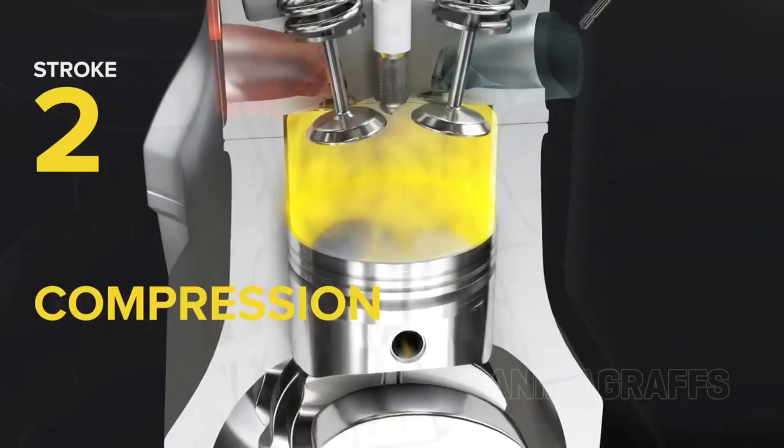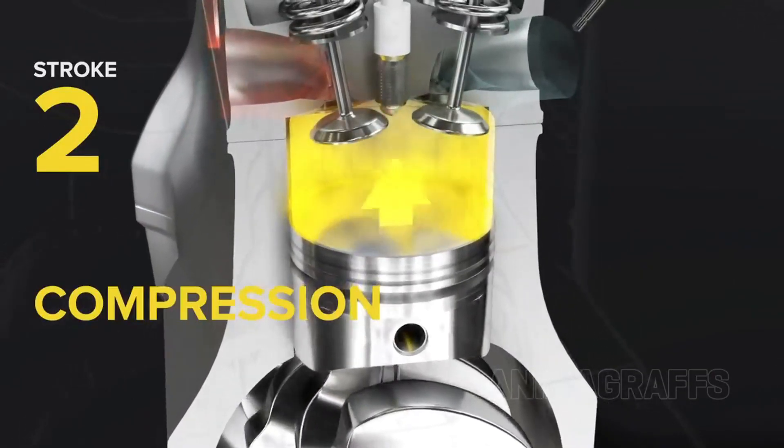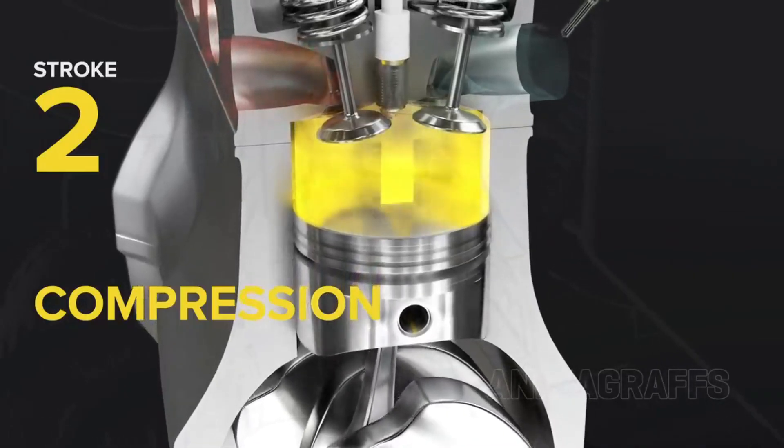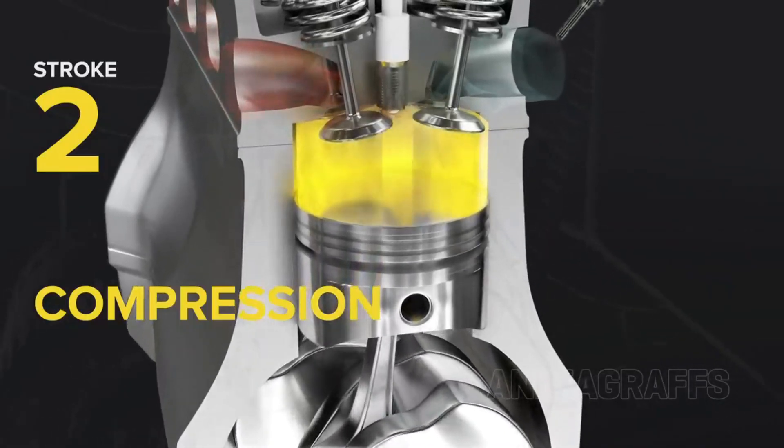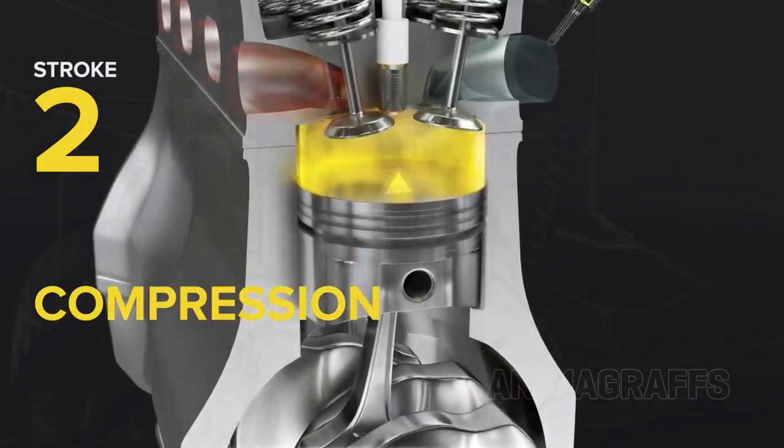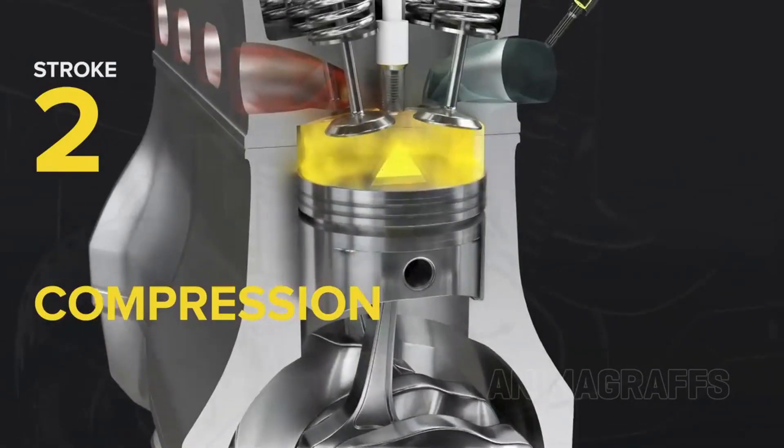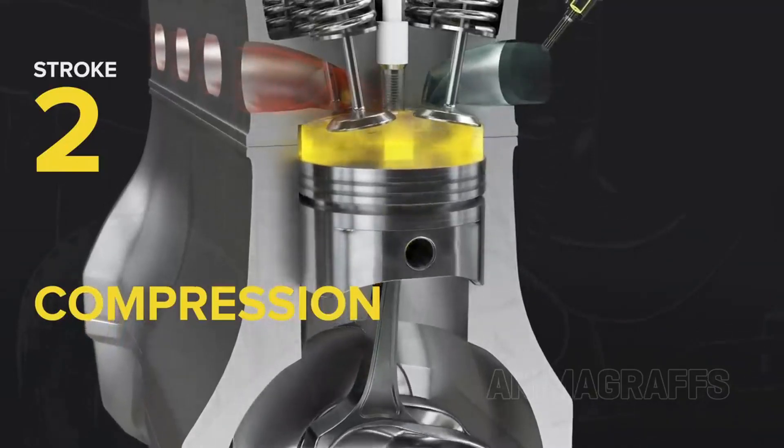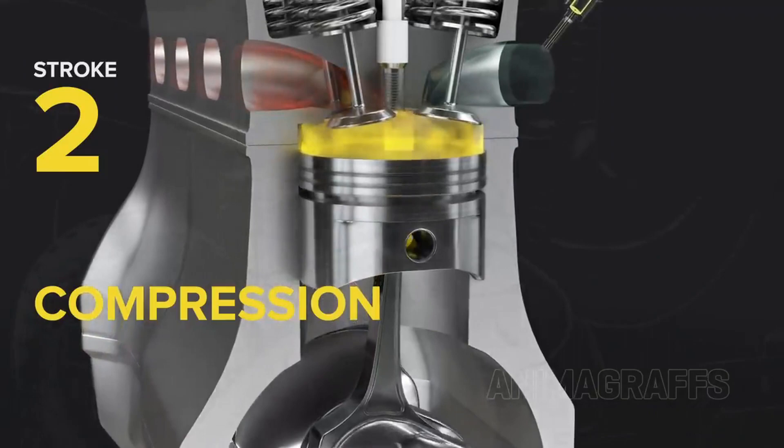Two, compression stroke. Building the pressure. The piston now moves upward, compressing the air-fuel mixture. This increases its density and makes it more explosive. The intake and exhaust valves are closed. The mixture is now a tightly packed, highly volatile charge. This is where tension builds, like pulling back a slingshot.